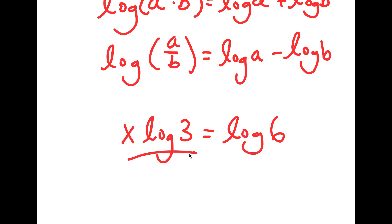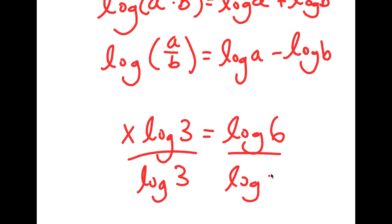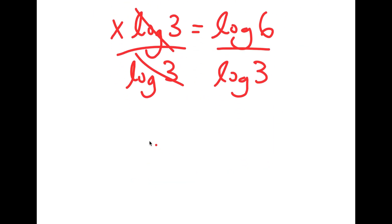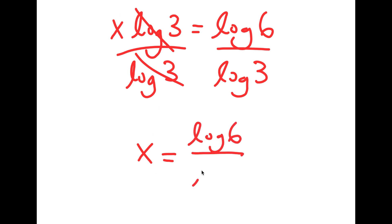Now, from here, we want to isolate x, so I can divide both sides by log 3. So then these two cancel out, and I get x is equal to log 6 over log 3.